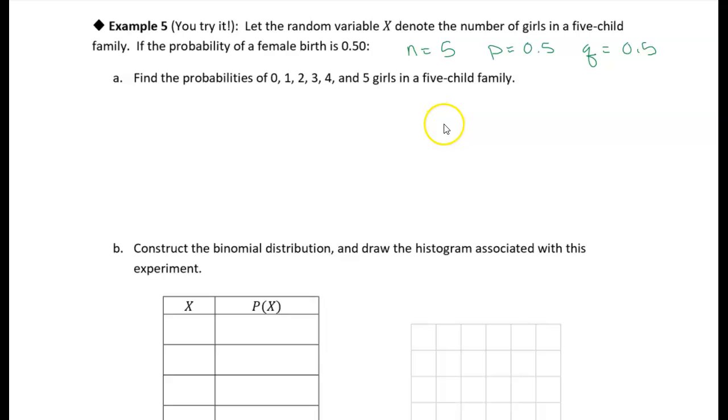So this is very much like that last one. We're just going to go through and calculate those probabilities of every possible outcome. Probability that we have zero girls, the probability that we have one girl, the probability that we have two girls, probability that we have three girls, and so on. We're just going to calculate all those probabilities.